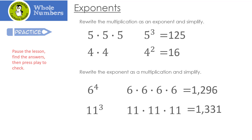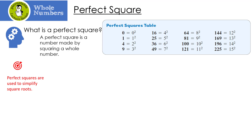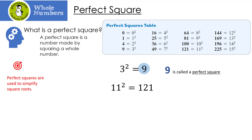Now that we're done with exponents, we're going to talk about a perfect square. What is a perfect square? A perfect square is a number made by squaring a whole number. Here's the table of perfect squares. Three to the second power, or three squared, is nine — that means three times three. Nine is called the perfect square. Eleven to the second power is 11 times 11, which is 121. 121 is called the perfect square. All of the perfect squares are taken to the second power — only the second power.